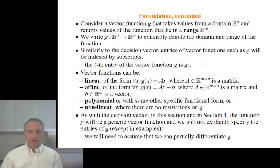As well as a decision vector, we need a vector function. I'll call it g. It takes values from the domain r to the n and returns values of the function in a range space, r to the m. That is to say, it has values that are m vectors. As a notational device, and I'll keep using this throughout the course, when I want to indicate that a particular symbol stands for a function, I'll write that symbol, g, colon, then the domain space, and arrow to the range space. And you could pronounce that g goes from r to the n into r to the m.